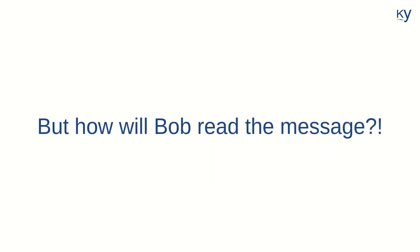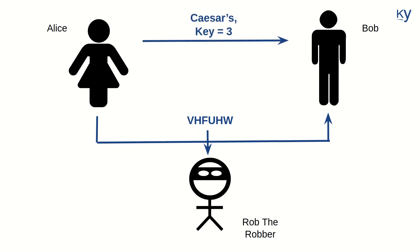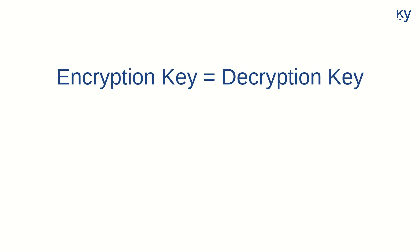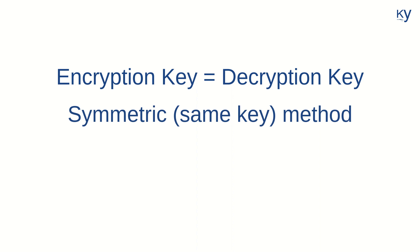But there's a problem. How will Bob read the message? Because it's not understandable to Bob either. So what Alice will have to do is tell Bob that she has used the Caesar cipher and a key of three — 'key' meaning the number or input that was necessary to transform the message; in this case, we shifted all letters by three places. But here's the problem: Rob the Robber can easily capture the key as well, and then he can reverse engineer the message and read the secret, which defeats the purpose of encryption. This is an example where the key used to lock is the same as the key used to unlock — the encryption key is the same as the decryption key — and this is called symmetric encryption.